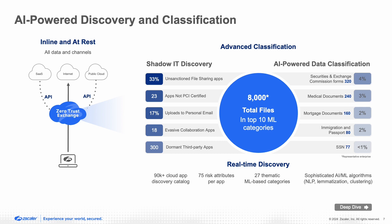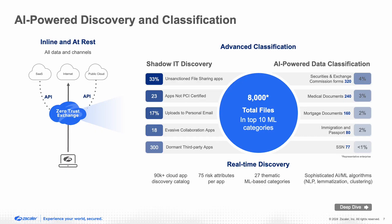Is it a medical document? Is it a mortgage document? Is it a securities and exchanges form? Not only do we classify the documents, but we also give you context across which applications — which instance of applications — this data is going to. From an application perspective, we also provide visibility into how risky that application is, whether it is evasive, or PCI certified. This way, you can combine the context of the document classification and the risk associated with the application to determine the risk of data exfiltration, and then take policy to control what data goes to which application instances — providing coaching as well as blocking of sensitive data exfiltration.